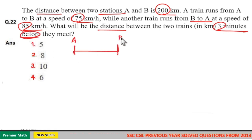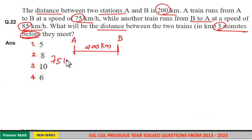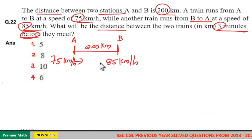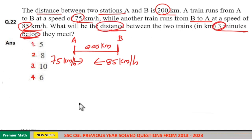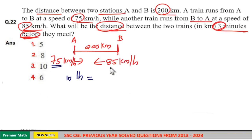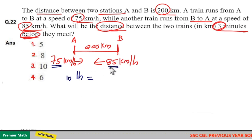The distance between station A and B is 200 km. The train from station A to B runs at a speed of 75 km per hour and the train from station B to A runs at a speed of 85 km per hour. In one hour, the train from A to B travels 75 km and in the same hour the train from B to A travels 85 km. So total distance travelled by these two trains in one hour is 75 plus 85, which equals 160 km.